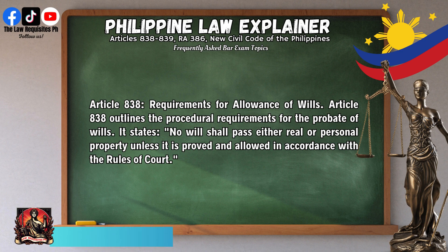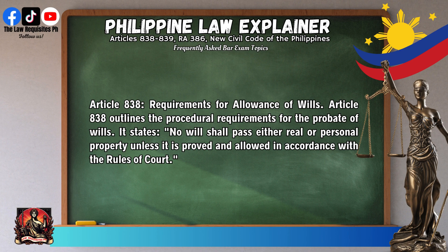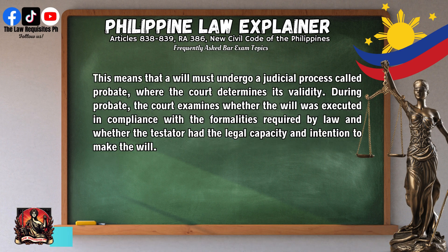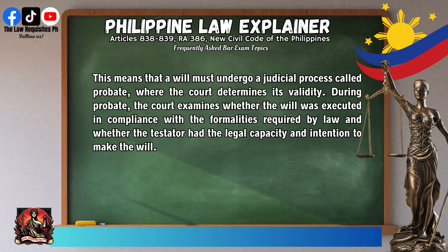Article 838 outlines the procedural requirements for the probate of wills. It states: 'No will shall pass either real or personal property unless it is proved and allowed in accordance with the rules of court.' This means that a will must undergo a judicial process called probate, where the court determines its validity. During probate, the court examines whether the will was executed in compliance with the formalities required by law and whether the testator had the legal capacity and intention to make the will.